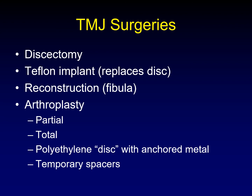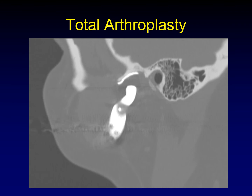Sometimes patients will have temporary spacers placed before completion of surgery and the polyethylene discs are placed. Here's what a total arthroplasty looks like. You can see both a component in the glenoid fossa and the components replacing the condylar head and neck. If you look carefully, you can just make out the low-density polyethylene disc that acts as a spacer.